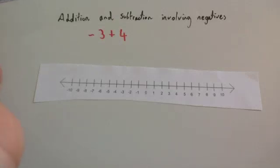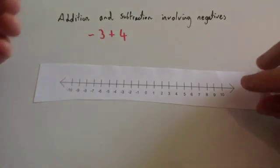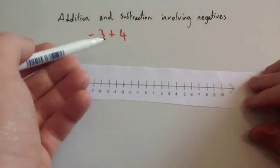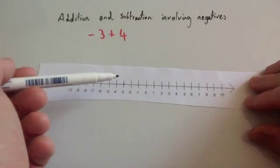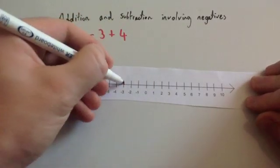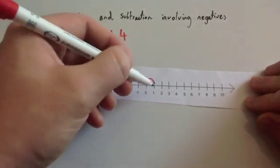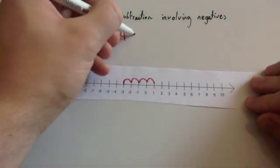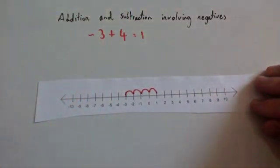In this video we're going to look at adding and subtracting involving negative numbers. So here we've got minus 3 plus 4. If I was to do minus 3 plus 4, I'd start at minus 3, and adding 4 means it's going to get 4 larger, so it's going to go 4 to the right: 1, 2, 3, 4. So the answer would be 1 — you just count out 4 from minus 3.